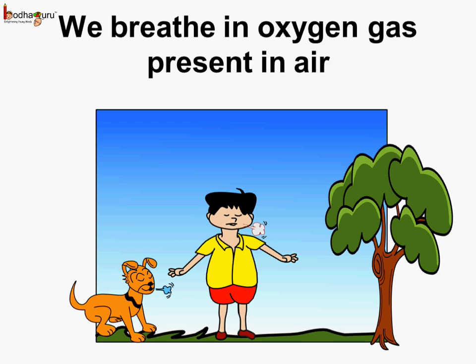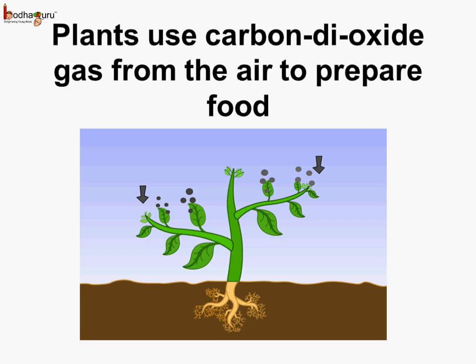Which we will learn in other classes. There is another gas called carbon dioxide. This is the gas which we give out of our body when we breathe out. And this is the gas which is used by plants to prepare food. Plants use the carbon dioxide gas from the air to prepare food, and this is the gas we exhale when we breathe out.